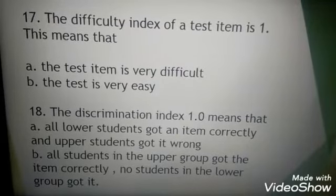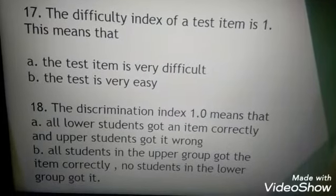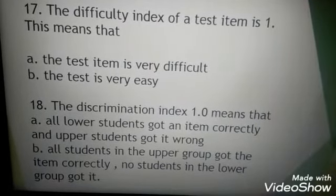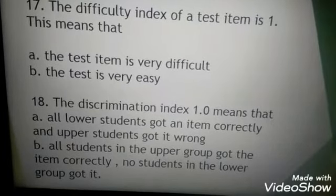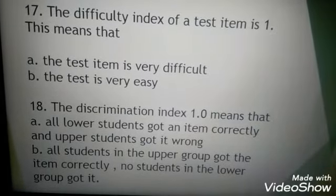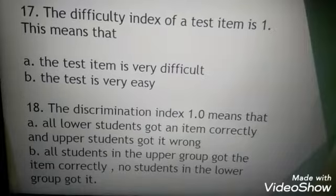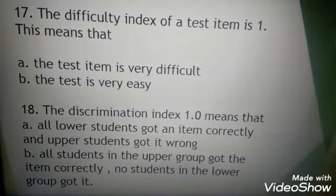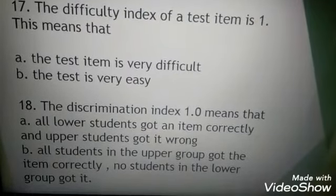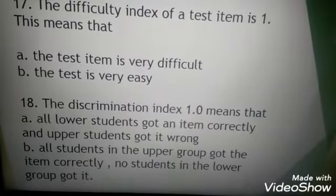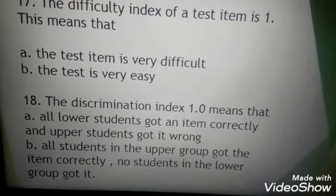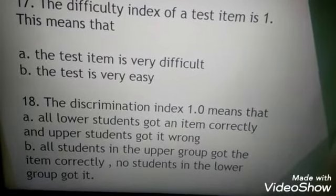Number seventeen: the difficulty index of a test item is 1. This means that A, the test item is very difficult, or B, the test is very easy. It's letter B. Number eighteen: the discrimination index 1.0 means that A, all lower students got an item correctly and upper students got it wrong, or B, all students in the upper group got the item correctly and no students in the lower group got it. The answer is letter B.